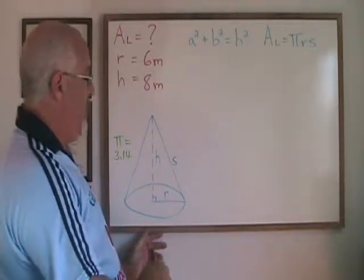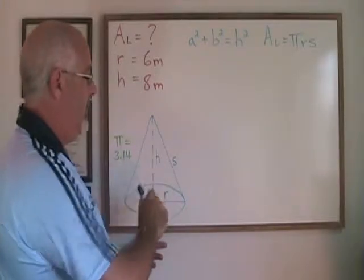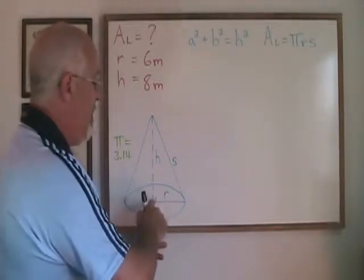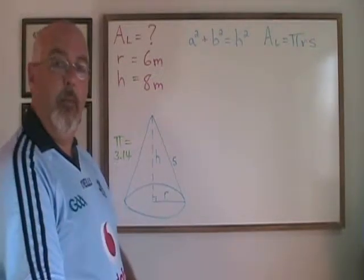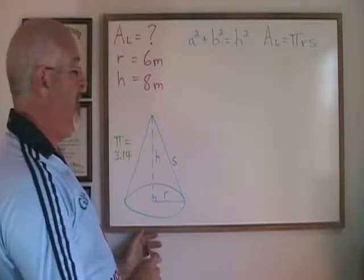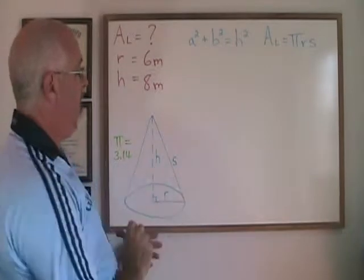In a cone, the altitude going from the vertex to the center of the circle on the bottom and the radius help form a right triangle with the slant height. We have a right triangle situation and we can use Pythagoras theorem to solve for the missing slant height in this situation.